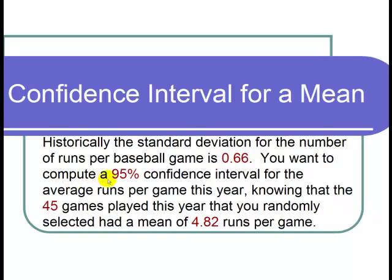You want to compute a 95% confidence interval for the average runs per game this year, knowing that the 45 games played this year that you randomly selected had a mean of 4.82 runs per game.